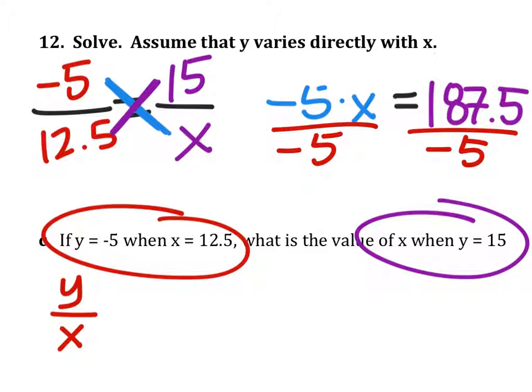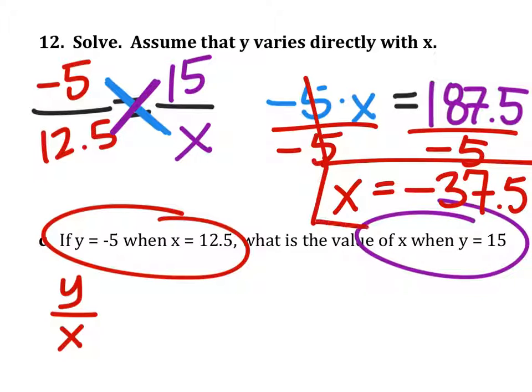So that the coefficient of x is a one, which we don't have to show. So 187.5 divided by negative 5 looks like that is negative 37.5. There is the answer. Thank you.